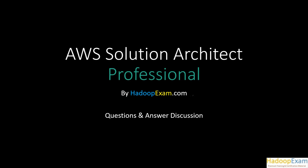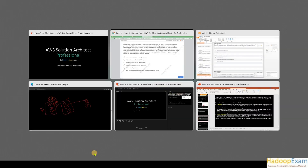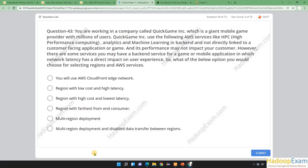Hello and welcome to Hadoop Exam learning resources. In this question I am going to cover question number 43 from practice paper 1 for AWS Solution Architect Professional level exam. These questions are provided by HadoopExam.com. Now let's go to the question directly and then come back here.